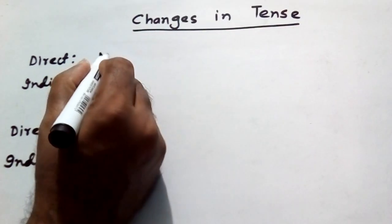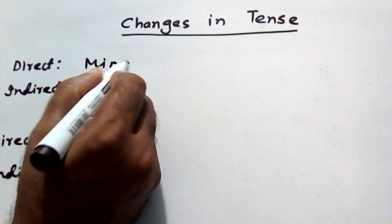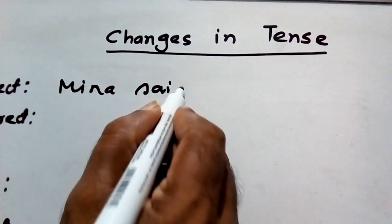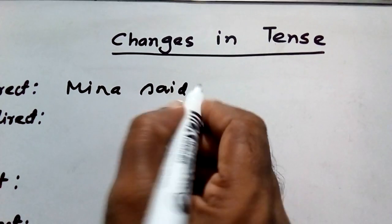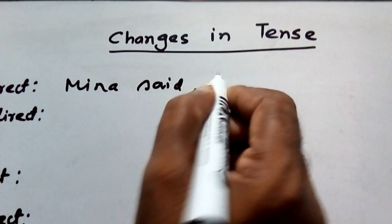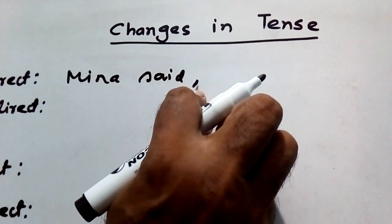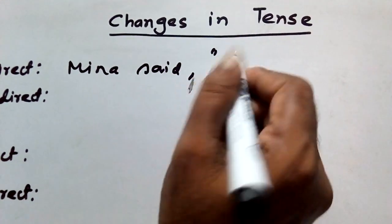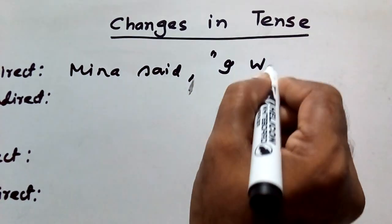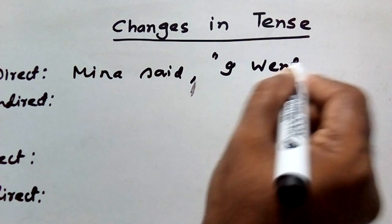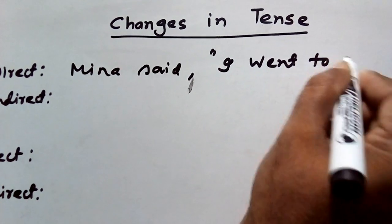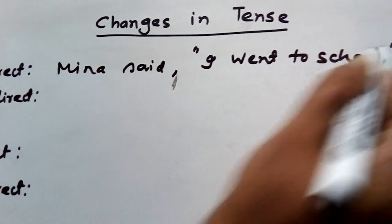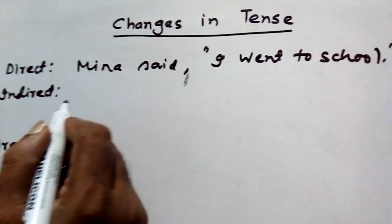Mina said, comma, inverted comma, 'I went to school.' So, this is our first direct speech example.